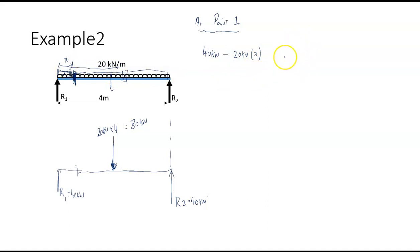If I was to plot that, that's a straight line. So it'd be 40 kilonewtons there, somewhere in the middle, this is negative 40 kilonewtons here. So that's the shear force.